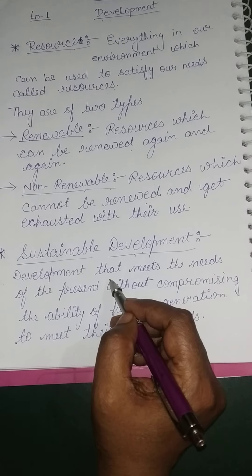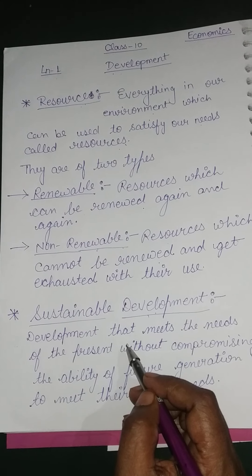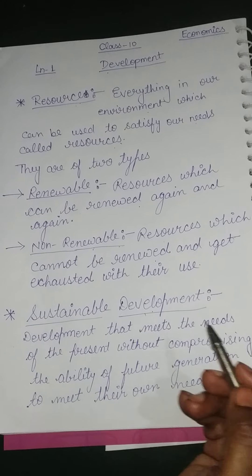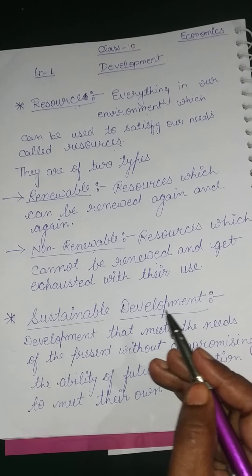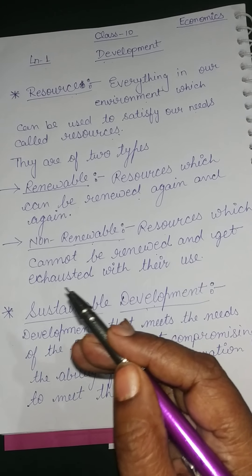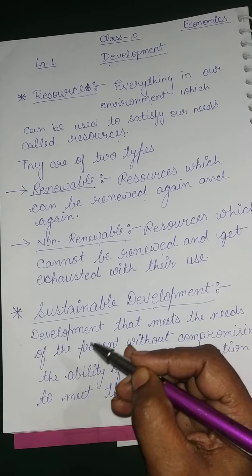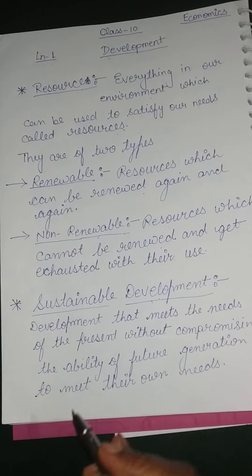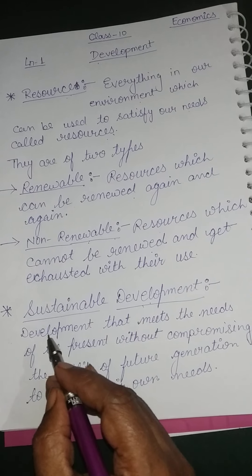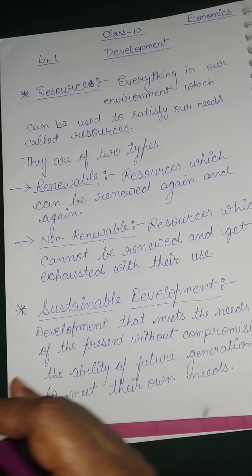In these processes of development, we are utilizing different types of resources for our development activities. But these resources are utilized in a planned way so that it is not providing any harm to our environment. At the same time, these resources are being preserved by human beings for their future generation, because as many opportunities as we are receiving with the help of these resources, the same development opportunities should be provided to our future generation.